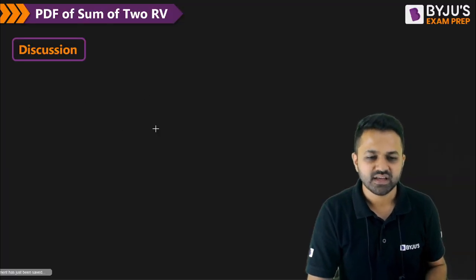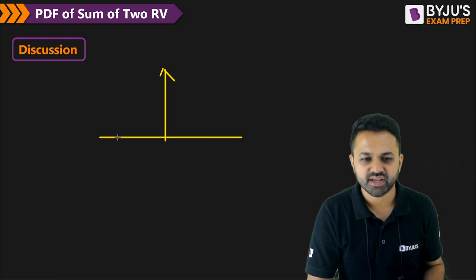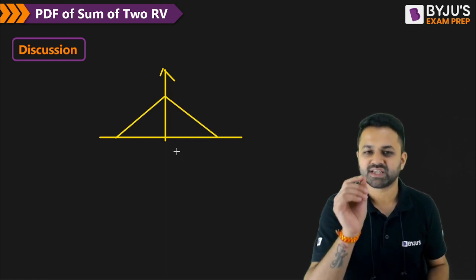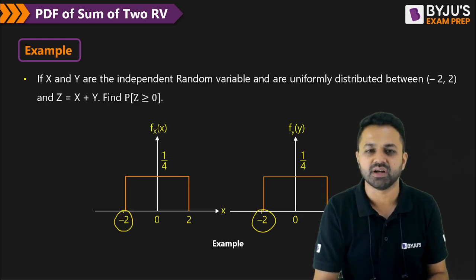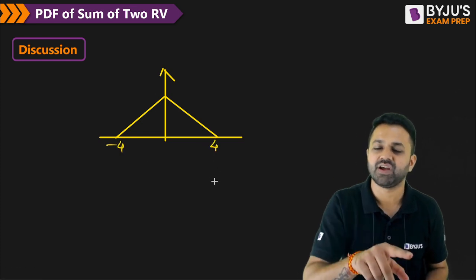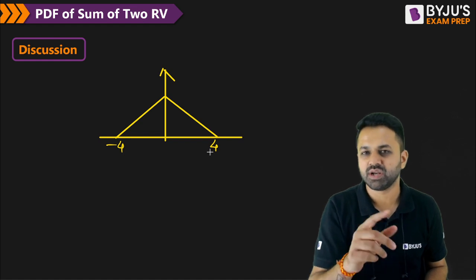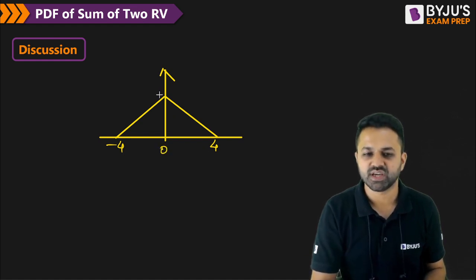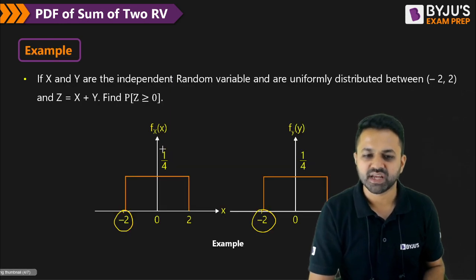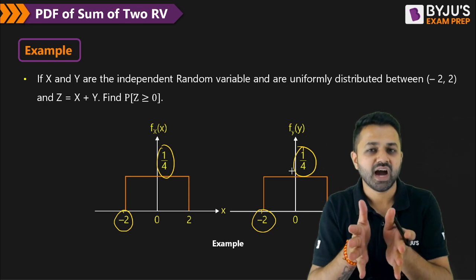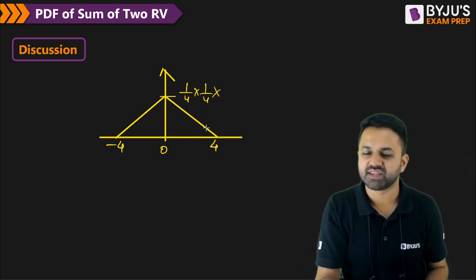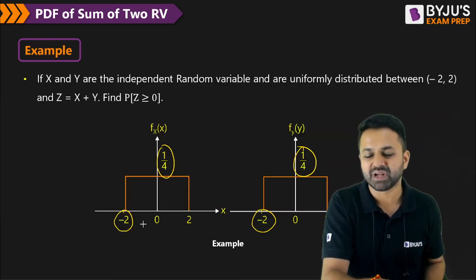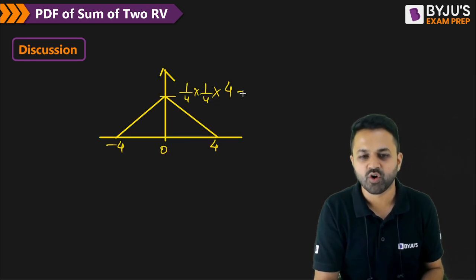This triangular signal will be having this shape. The minimum value of the triangle is the addition of the minimum values of the individual pulses, which is minus 4. The maximum value is the addition of the maximum values, plus 2 and plus 2, which is 4. The intermediate value is 0. The height is the multiplication of the two heights of the rectangular pulses, which is 1/4 times 1/4, multiplied by the minimum width. Since the two pulses have equal width, the minimum width is 4, so the height will be 1/4. This is the PDF of Z.